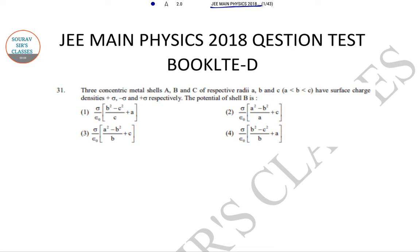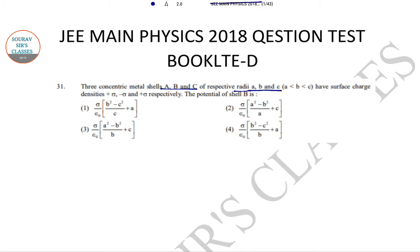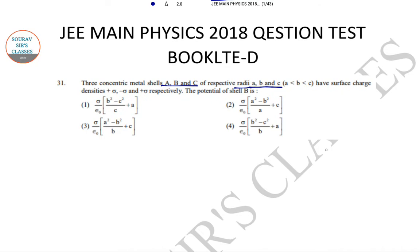The first question we have is on concentric metal shells. We have three concentric metal shells A, B, C with respective radii a, b, c where a less than b less than c. We can take the diagram like this: 1, 2, and 3. They have surface charge densities plus sigma, minus sigma, and plus sigma respectively. So this is sigma, minus sigma, and plus sigma.